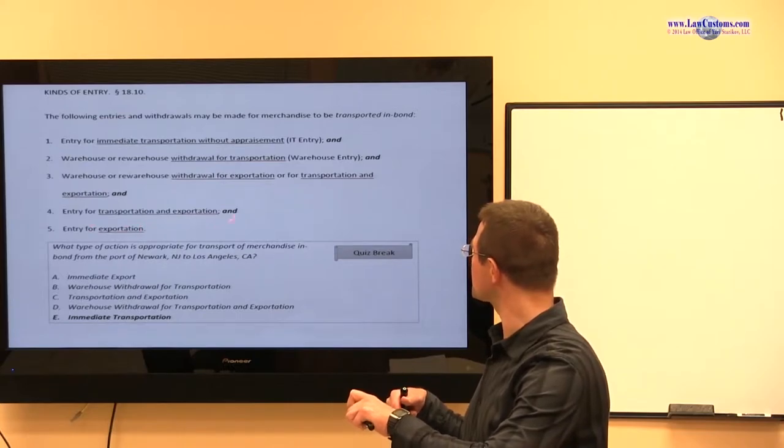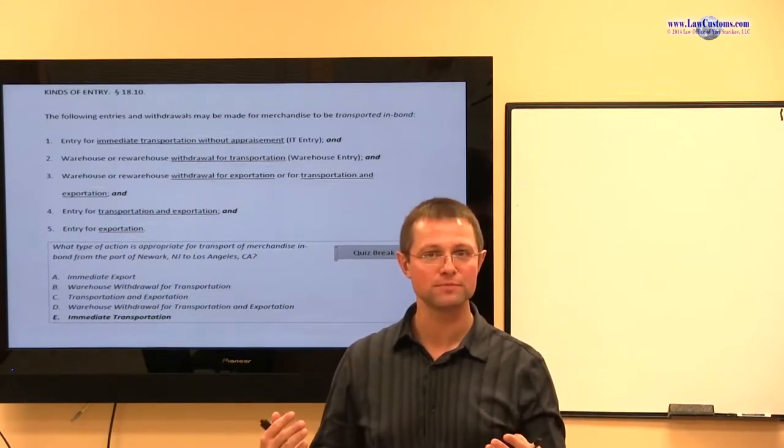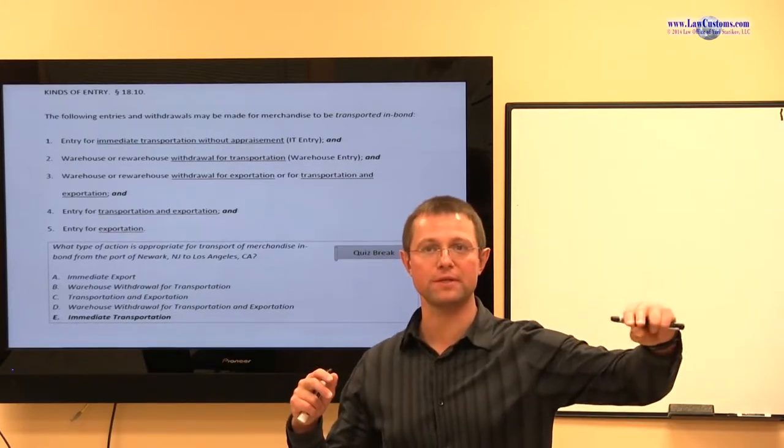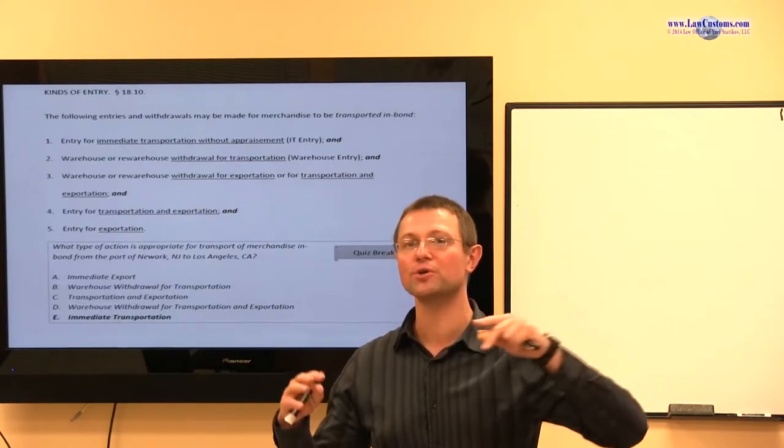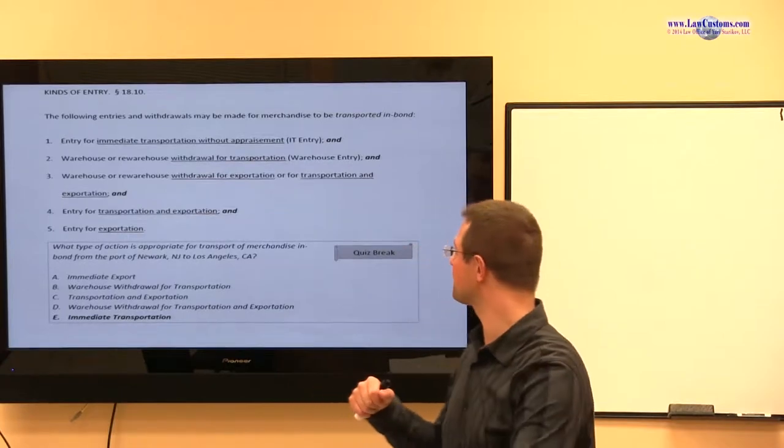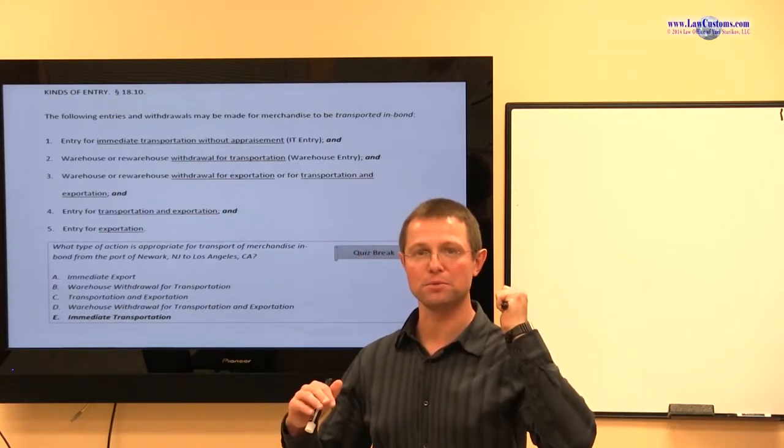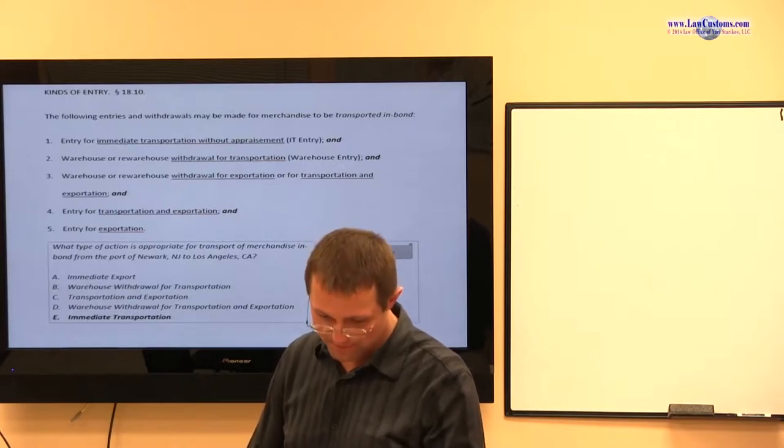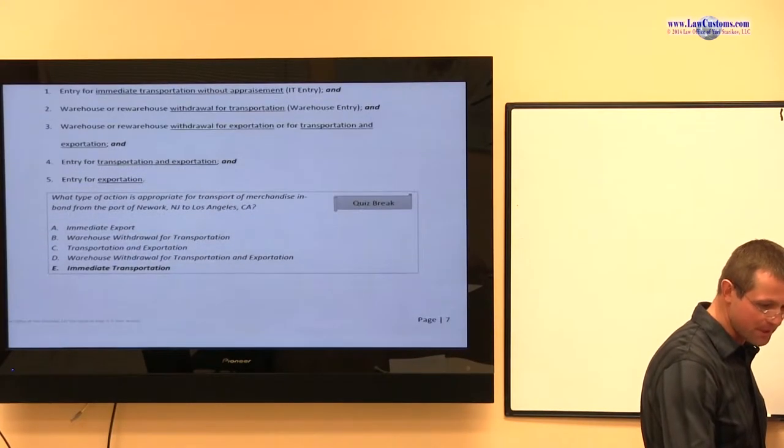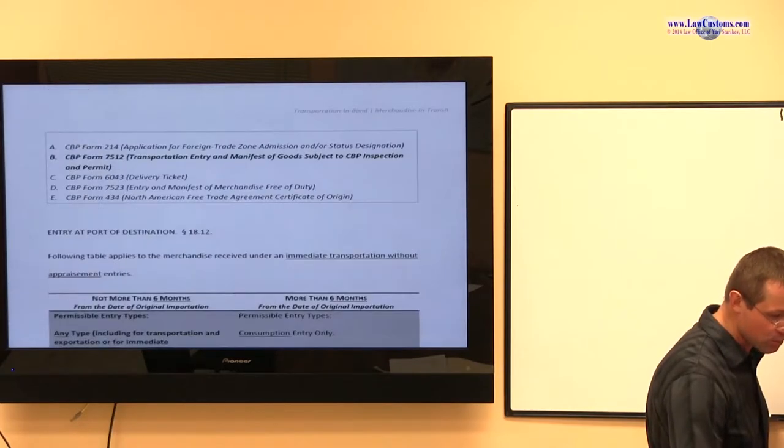Entry for transportation and exportation is the same thing as above except it's not a warehouse. The stuff comes in, let's say into port A, and it is going through the United States and it is going to exit the United States without ever entering the commerce of the United States through port B. Entry for exportation means it's not even going to travel through the United States, it's going to come in and come out. So those are the entry types, the inbound entry types that we have available under the code, under Part 18, Code of Federal Regulations.